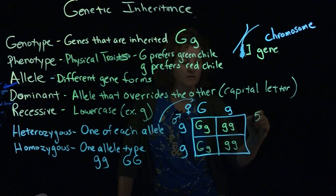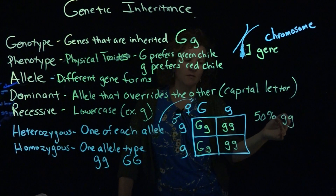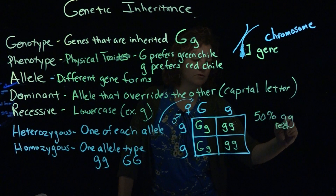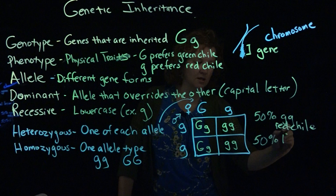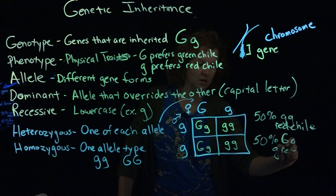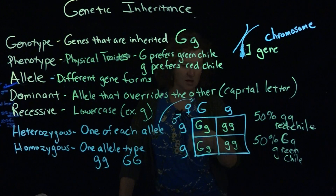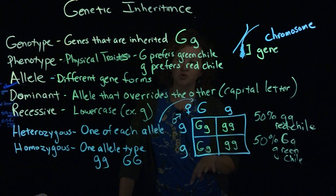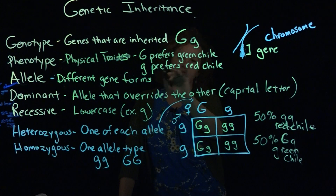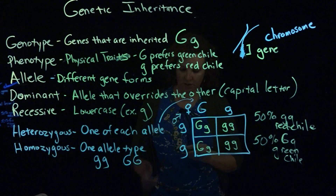The possibilities for offspring show that 50% are homozygous lowercase g, g — the red chili preference — and 50% are heterozygous capital G, lowercase g, which prefer green chili. Keep in mind the homozygous dominant combination would give the same green chili phenotype as well; we just didn't have that possibility here. Having a clearly defined key is important because you can easily forget what the letters mean. Once you have the key set, it's fairly easy to set up the box and get the ratios.